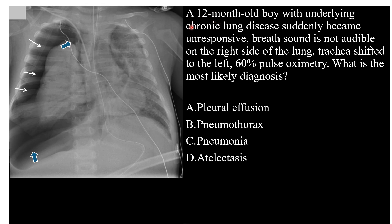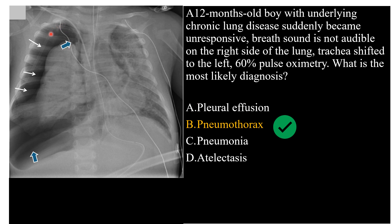This is a 12-month-old boy with underlying chronic lung disease who suddenly became unresponsive. Breath sounds are not audible on the right side, the trachea is shifted to the left, and oxygen saturation is 60%. What is the most likely diagnosis: pleural effusion, pneumothorax, pneumonia, or atelectasis? The correct answer is pneumothorax.